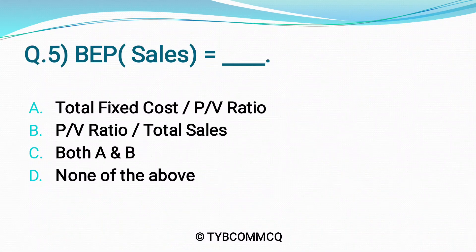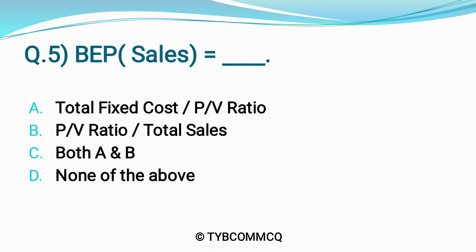Question No. 5: BEP Sales is equal to ___. Option A: Total Fixed Cost divided by PV Ratio. Option B: PV Ratio divided by Total Sales. Option C: Both A & B. Option D: None of the Above. The correct option is Option A — Total Fixed Cost divided by PV Ratio.